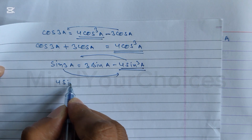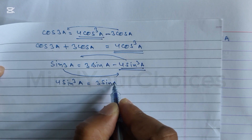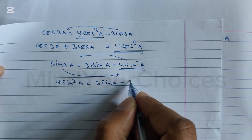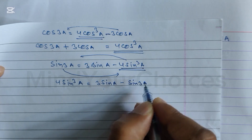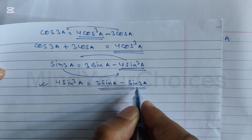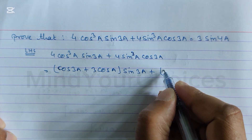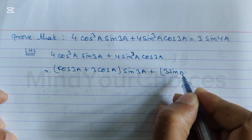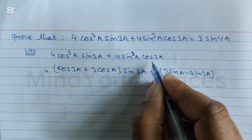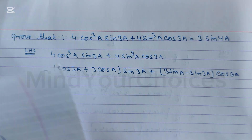So from sin3a = 3sina minus 4sin³a, we get 4sin³a = 3sina minus sin3a. So here we write 4sin³a as (3sina minus sin3a). Now write here: cos3a·sin3a plus 3cosa·sin3a plus (3sina minus sin3a)·cos3a.